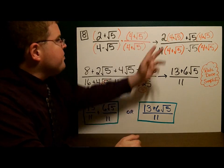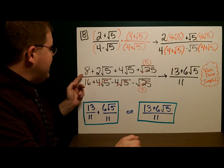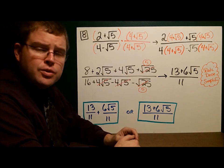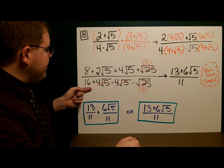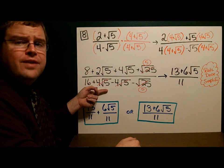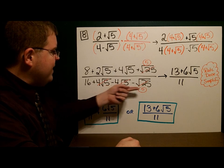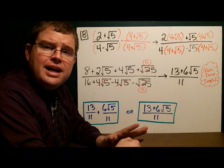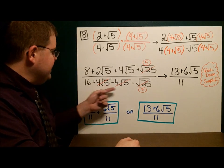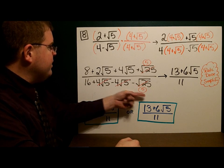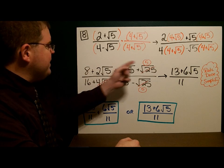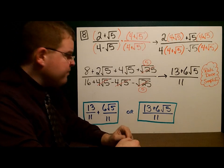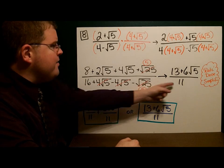I use double distributing and multiply it out. In the numerator: 8 plus 2 square roots of 5 plus 4 square roots of 5 plus the square root of 25. In the denominator: 16 plus 4 square roots of 5 minus 4 square roots of 5 minus the square root of 25. The middle terms in the denominator cancel and the square root of 25 is a perfect square. I combine like terms: 8 and 5 give 13, plus 6 square roots of 5 on top. On the bottom, 16 minus 5 is 11.